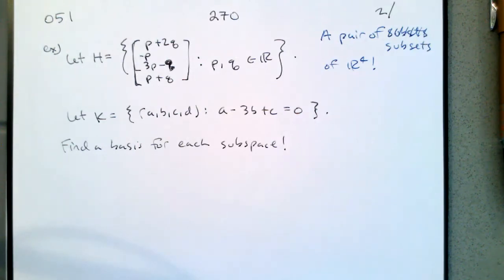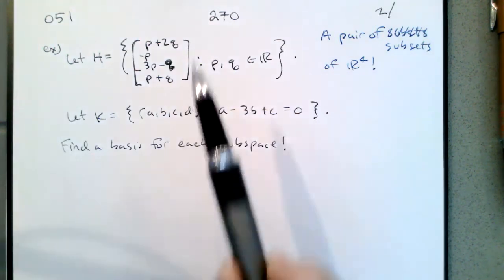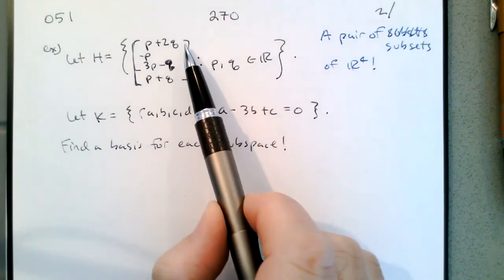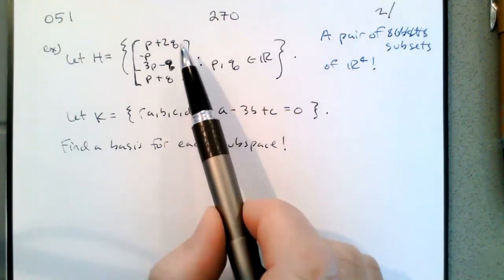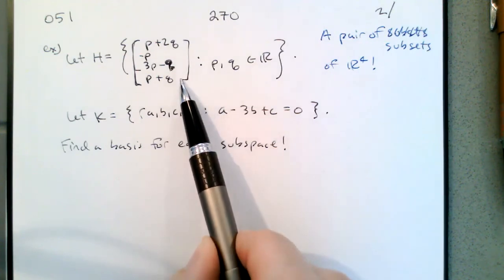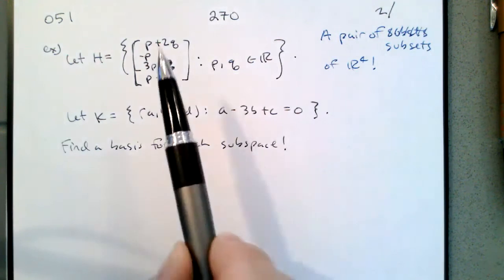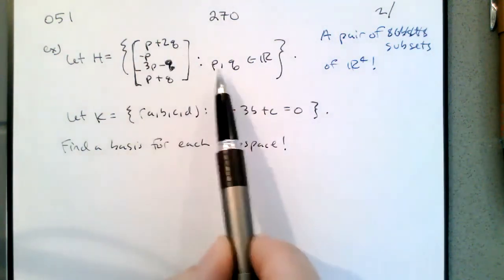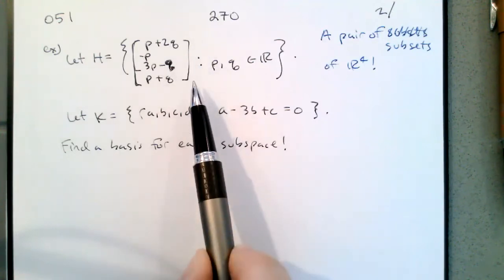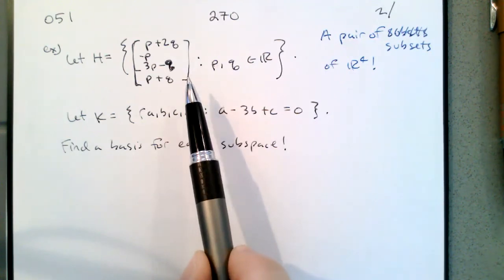Let's look at another example of finding a basis for some subspaces. Here we have a couple of subsets of R4, H and K. We can see that they are subsets of R4 because each one has four entries. The entries in H are written vertically: p plus 2q, negative p, 3p minus q, and p plus q, where p and q are real. If we think back to sections 2.8 and 2.9, we know that if we just have linear combinations of p and q with no constants by themselves, this will make a subspace.